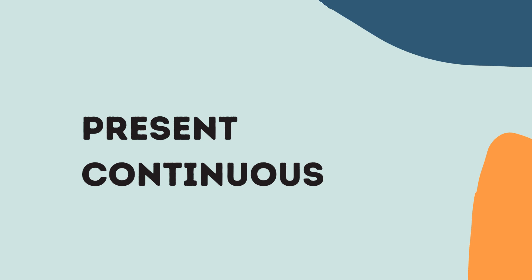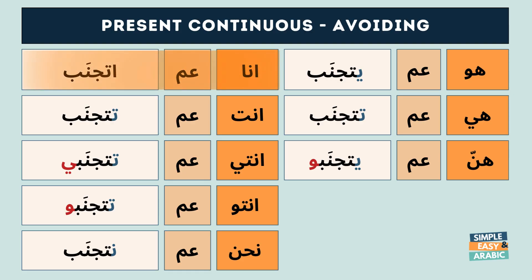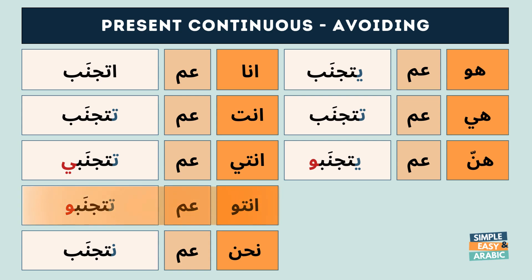Let's keep going. Time for the present continuous. أنا عم أتجنب. أنت عم تتجنب. أنتو عم تتجنبو. نحن عم نتجنب.